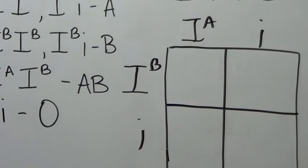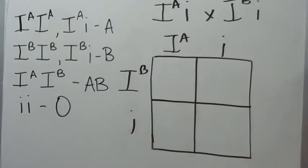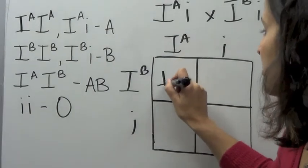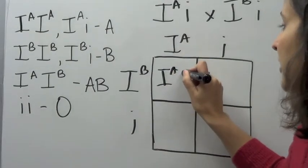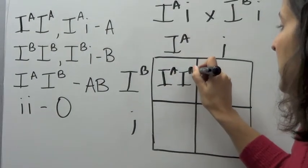In this case, even though this parent has type A blood and this parent has type B blood, 25% of their kids are going to have AB blood.